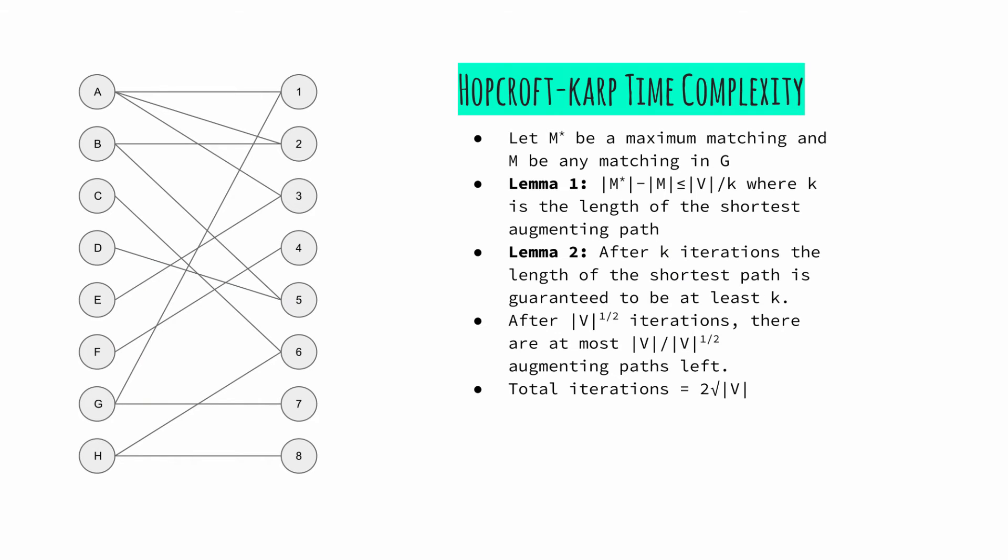As for the time complexity of this algorithm, the following lemmas have to be considered. With M star being the maximum matching and M any possible matching in a bipartite graph, lemma 1 states that the difference in cardinality of M star and M is always less than or equal to the number of vertices divided by the length of the shortest augmenting path. This inequality basically describes the number of paths left.